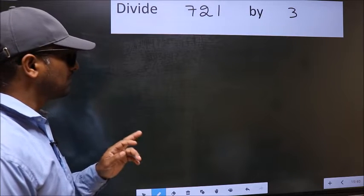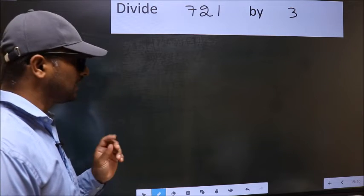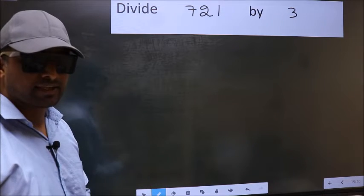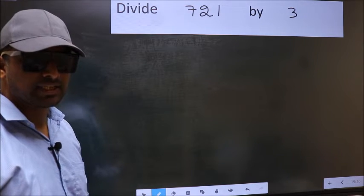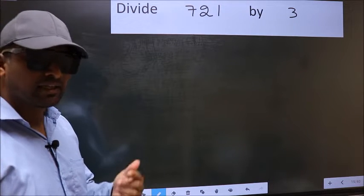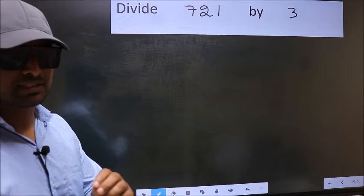Divide 721 by 3. While doing this division, many do this mistake. What is the mistake that they do? I will let you know. But before that, we should frame it in this way.